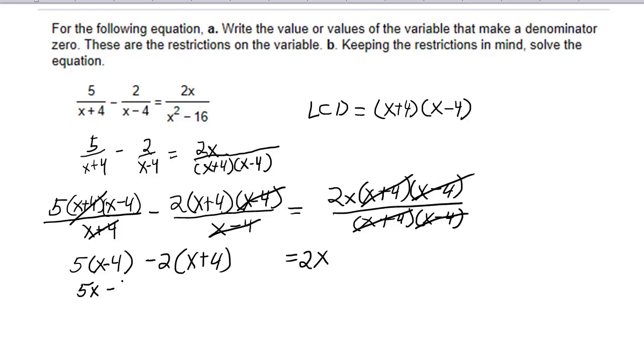5x minus 20 minus 2x minus 8 equals 2x. 5x minus 2x is 3x, and negative 20 minus 8 is minus 28. And that's going to equal 2x. And I need to come up here and continue.